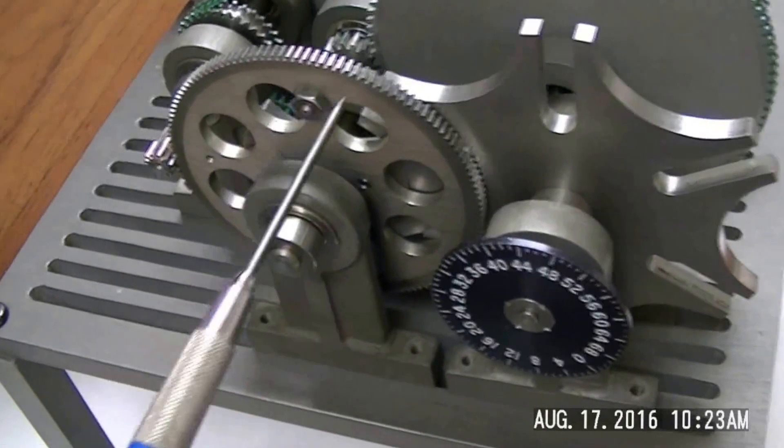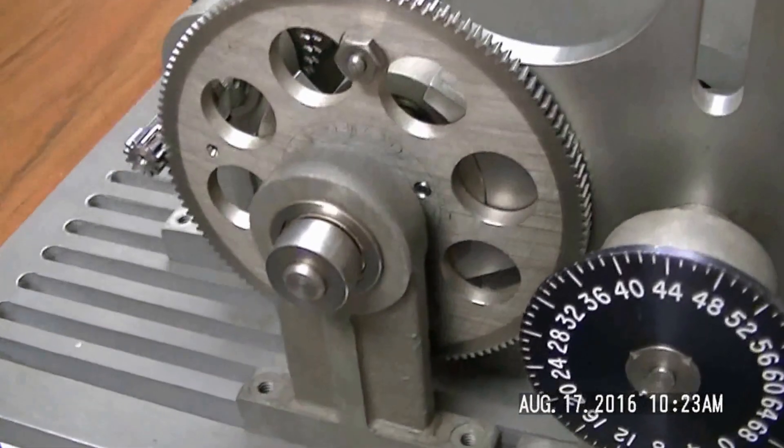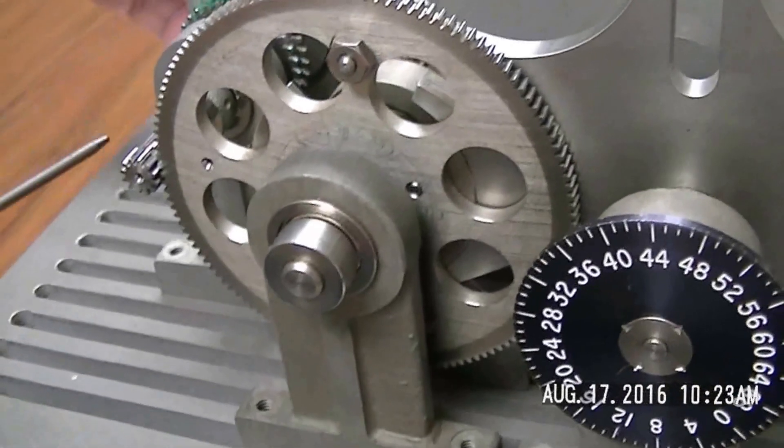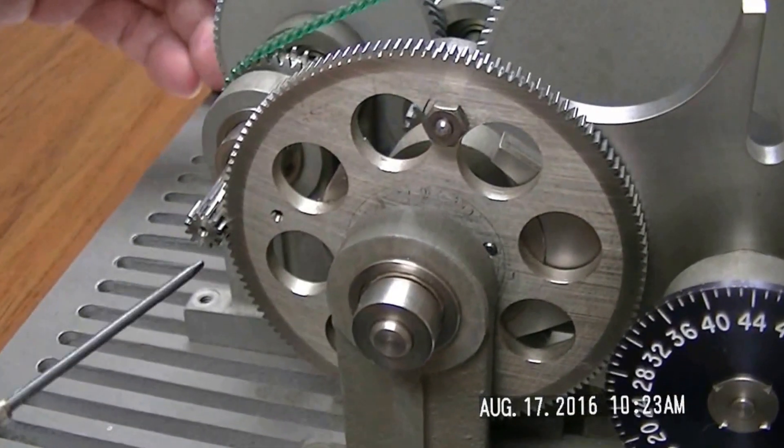Moving along downstream here, we have a spur gear. This is a standard type of gear that we make here. This large spur gear is driving a smaller gear, and the same thing holds here. You can drive forward and reverse with this type of gear setup.